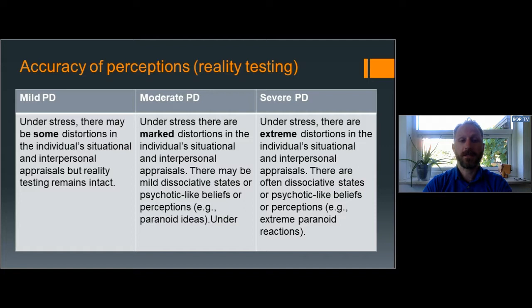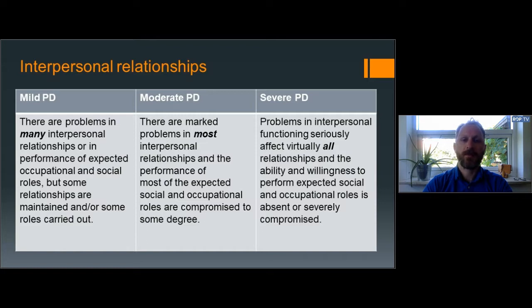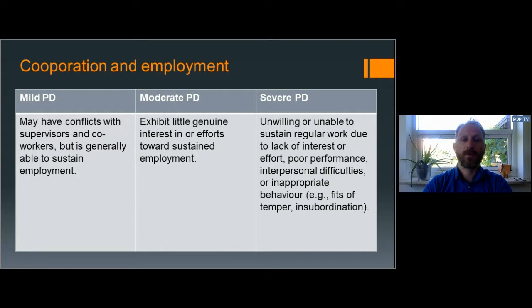Apart from reality testing, this capacity may also be related to the capacity for mentalization or social cognition. In terms of interpersonal relationships, mild personality disorder may involve several problems in many relationships, but certain relationships are maintained and social roles are carried out. In contrast, severe personality disorder may involve interpersonal problems that seriously affect all relationships. In terms of cooperation and employment, mild personality disorder may involve some conflicts with colleagues but is generally able to sustain employment. In contrast, severe personality disorder may involve that the individual is either unwilling or unable to keep a regular job or to work in general.